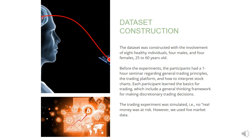The dataset was constructed by sensing the brain signals of eight healthy individuals, four males and four females, aged 25 to 60 years old. Before the experiment, the participants had an hour seminar regarding general trading principles, the trading platform, and how to interpret stock charts. Each participant learned the basics of trading, including a general thinking framework for making discretionary trading decisions. The trading experiment was simulated — that is to say, no real money was at risk. However, we used live market data. As a reference, Johnson and Bickel conducted experiments and concluded that the feelings toward real and hypothetical money were very similar in intensity.